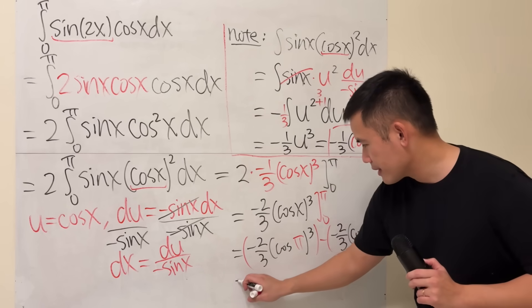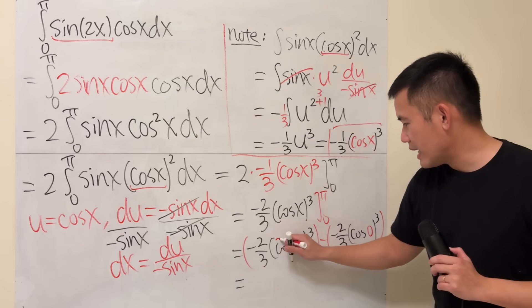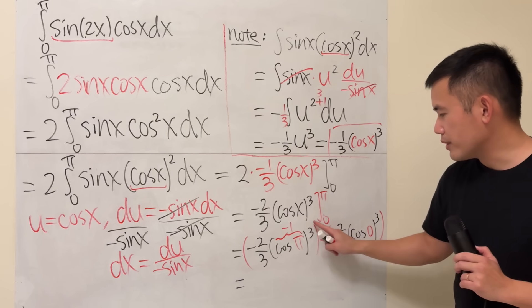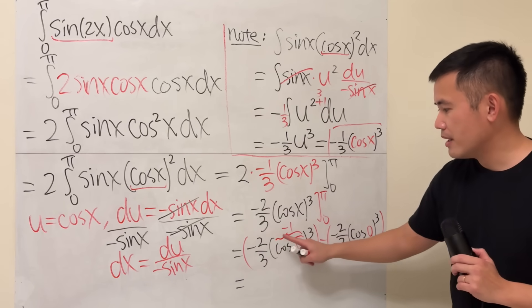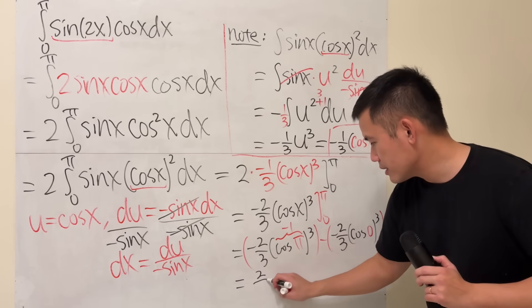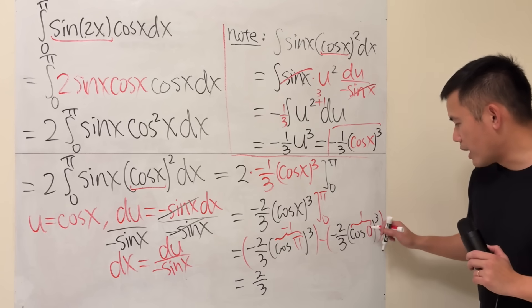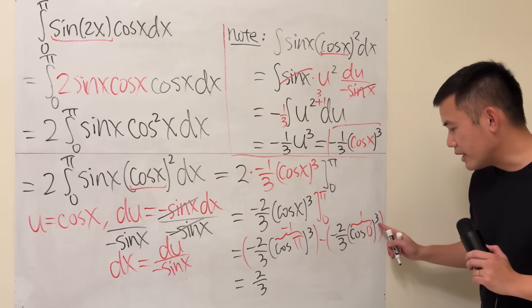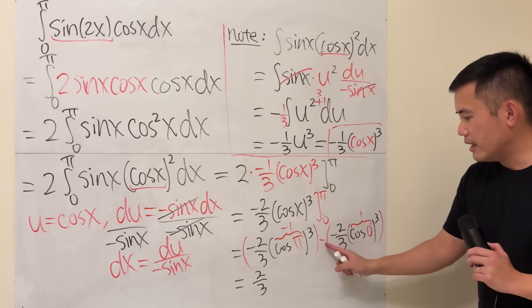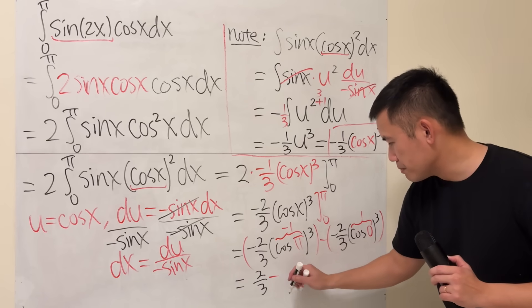Okay, cosine of pi is negative 1. Negative 1 to the third power is negative 1. Times this is positive 2 third. And then cosine of 0 is 1. 1 to the third power is 1, and then it's just that. And then negative negative becomes a positive.